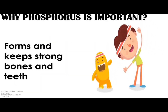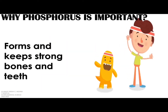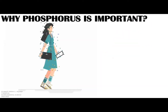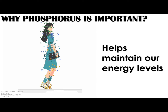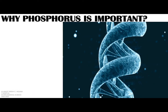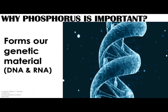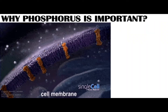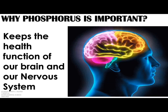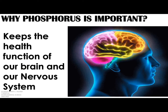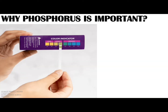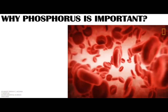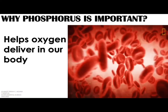Phosphorus is also important to us humans. It forms and keeps our bones and teeth strong, and helps maintain our energy levels. It forms our genetic material, DNA and RNA, and helps form the membrane of our cells. It keeps the healthy function of our brain and nervous system, helps maintain acid-base balance (pH), and helps deliver oxygen in our body through the bloodstream.